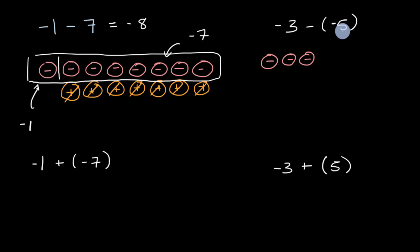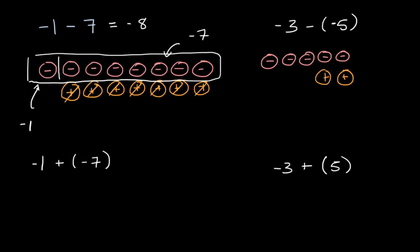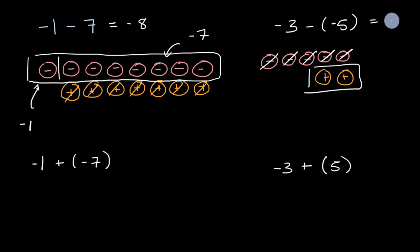Now if we want to subtract out negative five — take away five negative integer chips — we need at least two more negative integer chips. So if we add two more negative integer chips and two more positive integer chips, we're not changing the value; what I have depicted here is still negative three because those cancel out. But now I can subtract out five negative integer chips. These five negative integer chips — I can take them all away. That's subtracting out a negative five. And what am I left with? Just these two positive integer chips. So this is going to be equal to positive two.